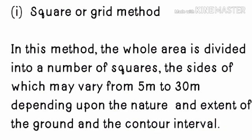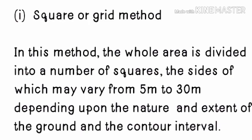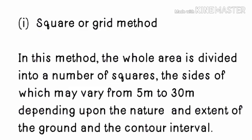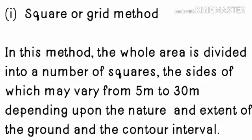The square method: In this method, the whole area is divided into a number of squares, the sides of which may vary from 5 to 30 meters depending upon the nature and extent of the ground and the contour interval.